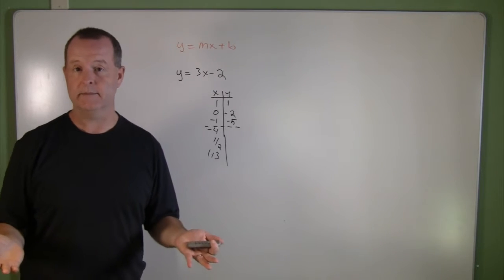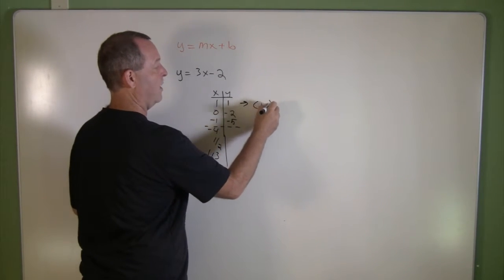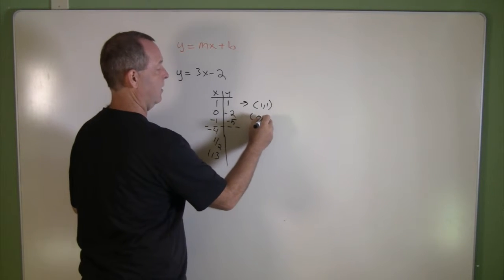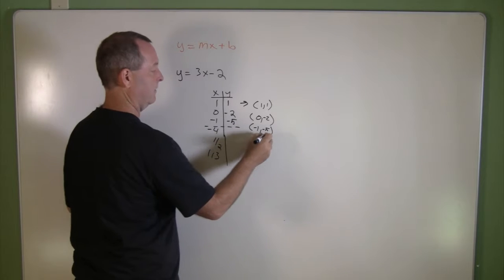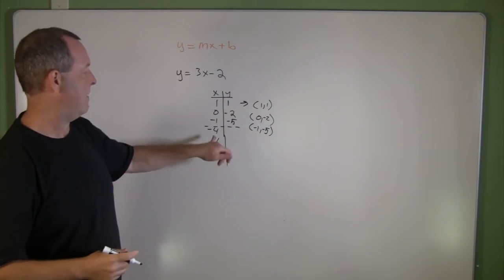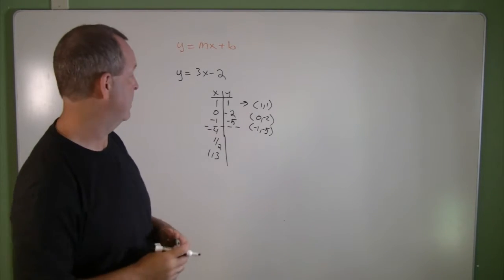That produces three ordered pairs: the point 1 and 1, 0 and negative 2, negative 1 and negative 5. And then my other numbers that I threw in there just to show you that we can do what we want to do. Three points, that's enough to produce a line.